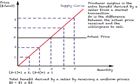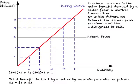In total, this person derives a benefit of three dollars by setting a uniform price — two dollars from the first unit and one dollar from the second. This difference between the actual price and the price at which the person is willing to sell is called producer surplus. Producer surplus is the extra benefit derived by a seller from a market transaction: the difference between the actual price received and the price at which this person is willing to sell.